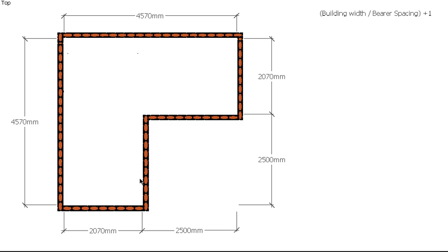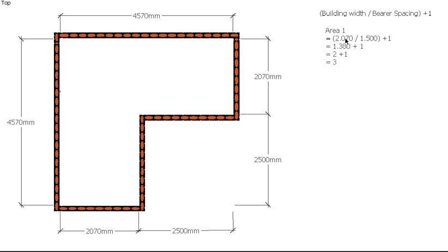If I take this area here, the width of this area is 2.7m. To work out the number of bearers I need in this area, I do 2.7m divided by my bearer spacing of 1.5m, plus 1. 2.7 divided by 1.5 gives us 1.38, so we round that up to 2 because we can't have 0.38 of a bearer. Adding the 1 gives us 3 bearers for that area.